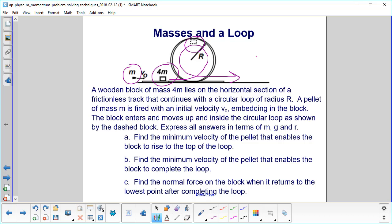That's A. B. Find the minimum velocity of the pellet that enables the block to complete the loop. And C. Find the normal force on the block when it returns to the lowest point after completing the loop. And we'll go over these in more detail when we hit each particular piece.